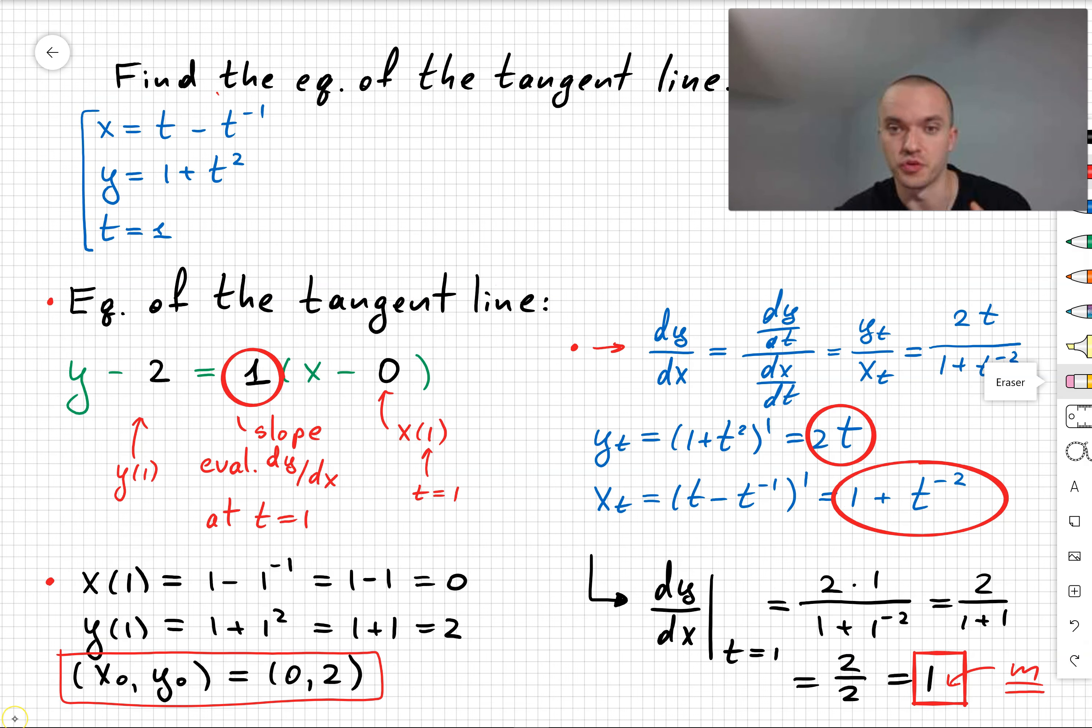In our final step, I'll plug the slope into the equation. We can see that the equation becomes y minus 2 equals x, or in other words, y equals x plus 2.